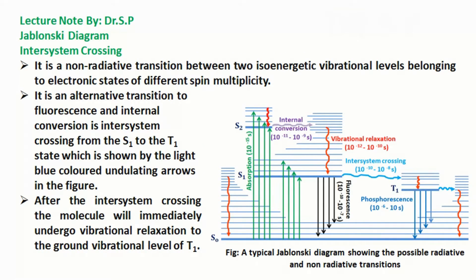Inter-system crossing is a non-radiative transition between two iso-energetic vibrational levels belonging to electronic states of different spin multiplicity. It is an alternative transition to fluorescence and internal conversion — specifically inter-system crossing from the S1 to the T1 state, shown by light blue colored undulating arrows in the figure. After inter-system crossing, the molecule will immediately undergo vibrational relaxation to the ground vibrational level of T1.